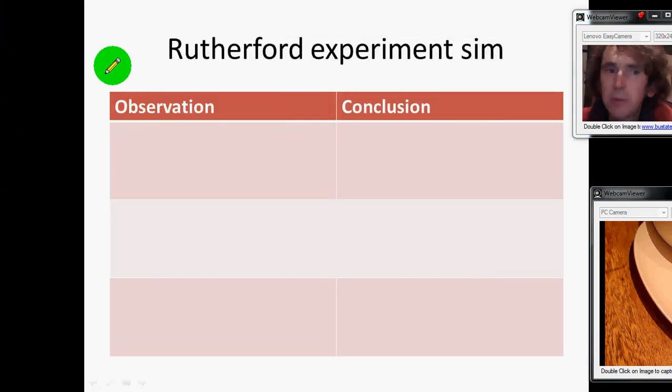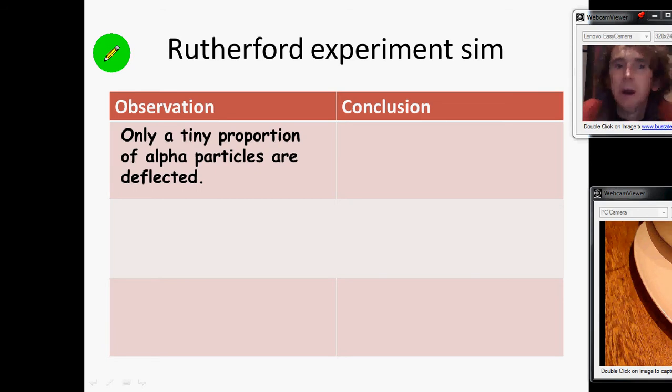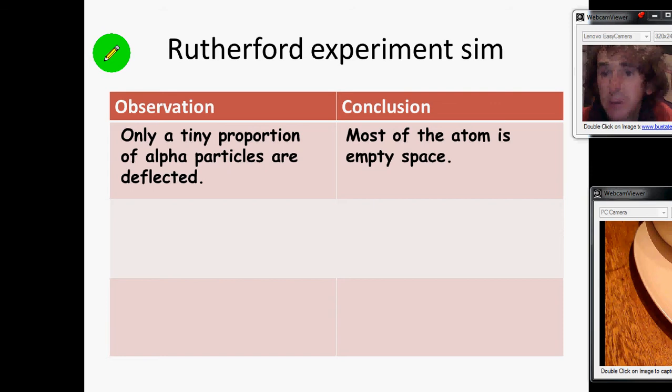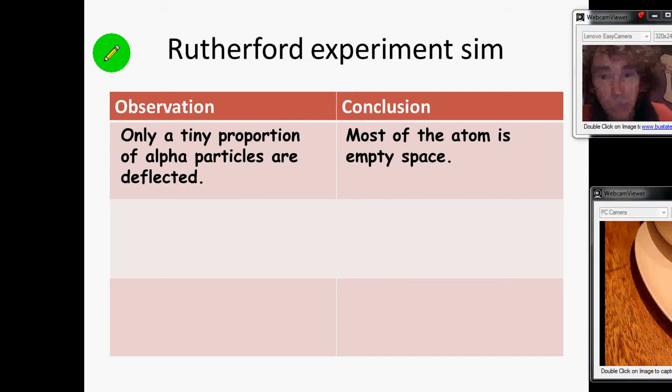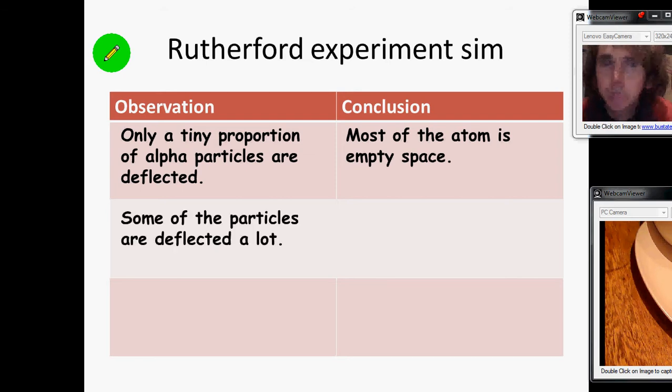So here's what happened in terms of his observations. The first observation was that only a tiny proportion of the alpha particles were deflected. So that made him realize that most of the atom must be empty space. We're talking 99.999999999999% empty space, which in itself was a big step forward in our understanding. This table is mostly empty space. But some of those particles are deflected a lot. Now these alpha particles were really big. They were the most energetic particle anybody had ever discovered. He said it was like firing a cannon at a sheet of tissue paper and having the cannonball bounce straight back.